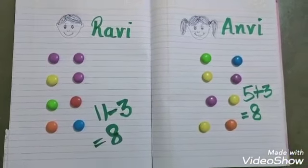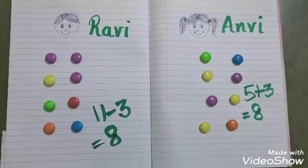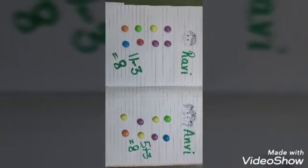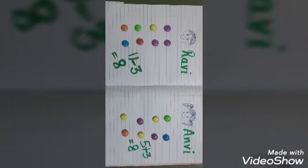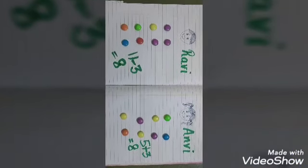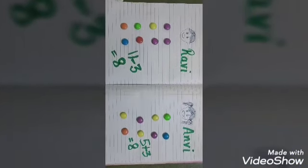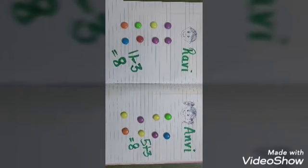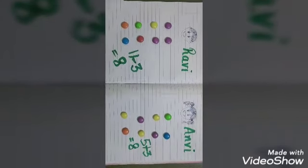Now both have equal candies. So children, I hope you have understood the basics of the chapter Give and Take. Thank you.